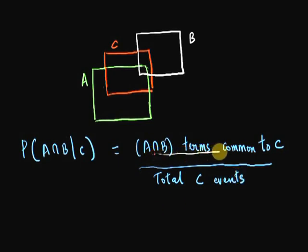In other words, my numerator will be the segment that contains events common to all these three A, B and C. So if you look at my diagram here, the portion common to all the three events will be this blue portion, A intersection B intersection C.